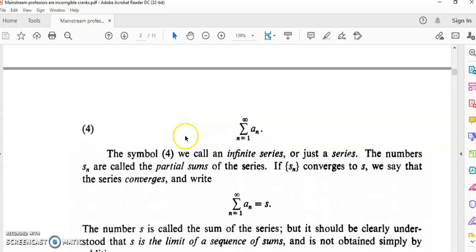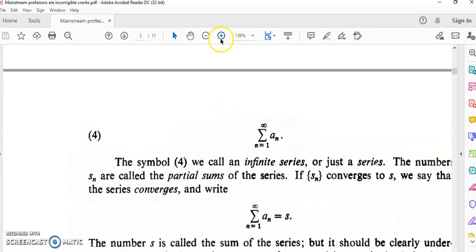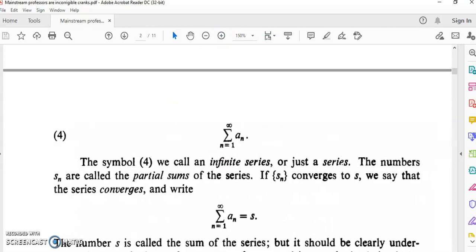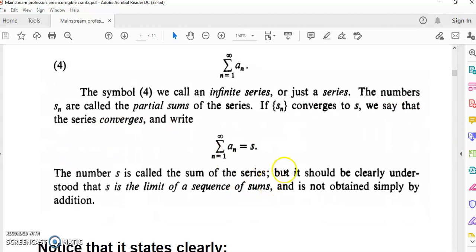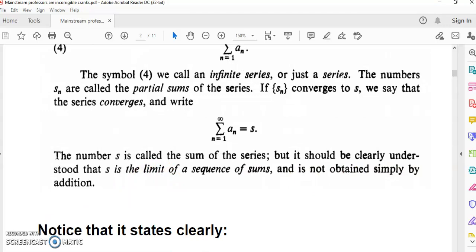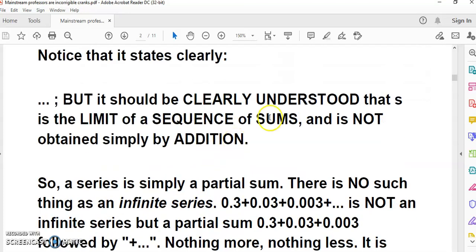On page 59, or page 68 of the PDF, it says we call this symbol an infinite series, or just a series. The numbers s_n are called the partial sums of the series. If s_n converges to s, we say that the series converges and write that s is the sum of the series. But it should be clearly understood that s is the limit of a sequence of sums and is not obtained simply by addition.